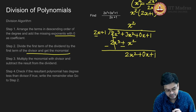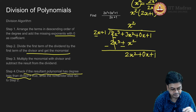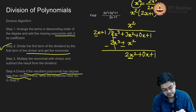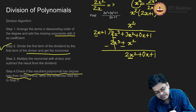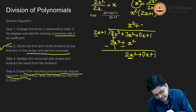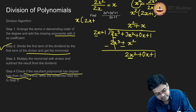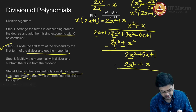Now we check whether the degree of this result is greater or smaller than the divisor. The degree is not less, so we continue to step 2. We divide the leading term 2x² by 2x, which gives x. We add x to the quotient, then multiply x with (2x + 1) to get 2x² + x. We write 2x² + x below and subtract.